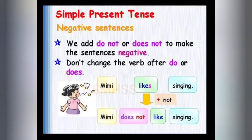Good morning students. Today we are going to learn how to form negative sentences using 'do not' and 'does not'. We can change a positive sentence into a negative sentence by adding the word 'do not' or 'does not'. We must not change the verb after 'do' or 'does'.